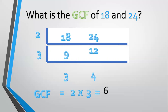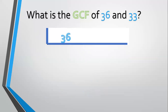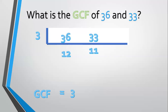Another example — how about 36 and 33? List them: 36 and 33. The common factor that can divide both is 3. 36 divided by 3 equals 12. 33 divided by 3 equals 11. Now 12 and 11 have no more common factor. Therefore, the GCF of 36 and 33 is 3.